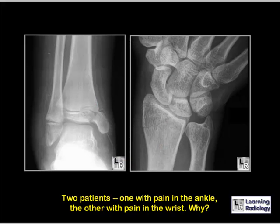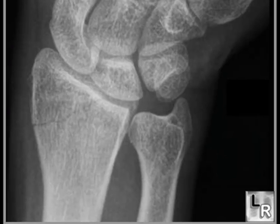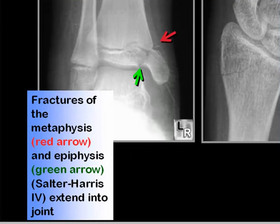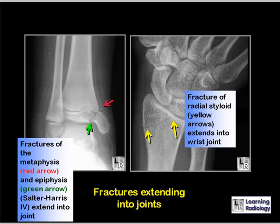Two patients: one with ankle pain, one with wrist pain. The patient with ankle pain has a fracture extending from the epiphysis through the epiphysial plate, including a portion of the metaphysis — this is a Salter-Harris IV fracture, associated with a poorer prognosis due to angular defects when healing. The patient with wrist pain has a diagonal fracture across the radial styloid extending into the wrist joint. Both fractures extend into joints, frequently damaging articular cartilage and leading to earlier osteoarthritis.